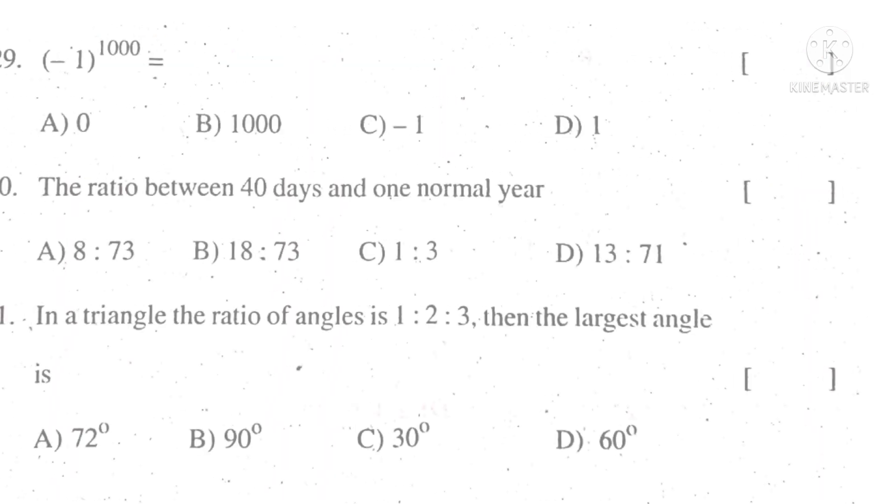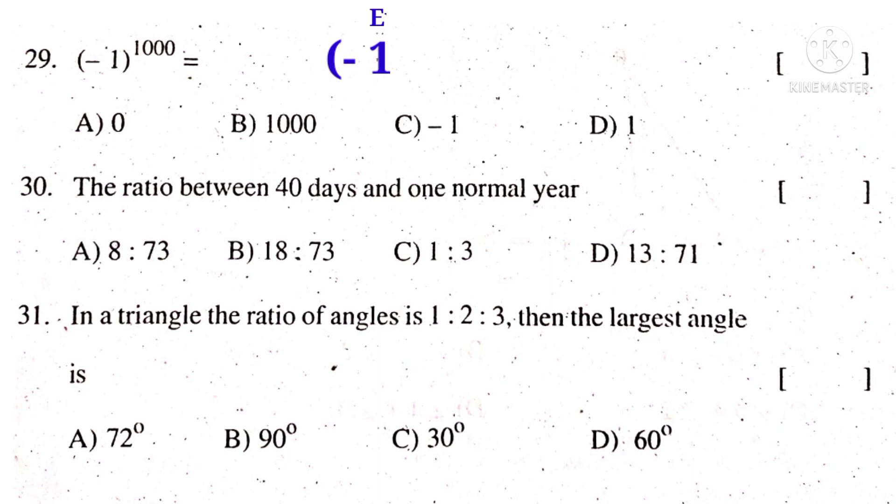Now 29th bit. Minus 1 whole to the power of 1000 is equal to. Minus 1 to the power of even number gives 1. Here 1000 is an even number. So the answer is 1. So the correct choice is D.